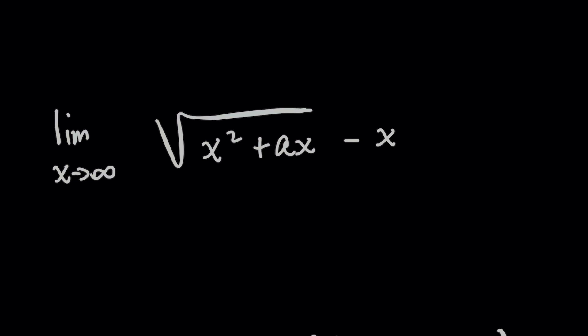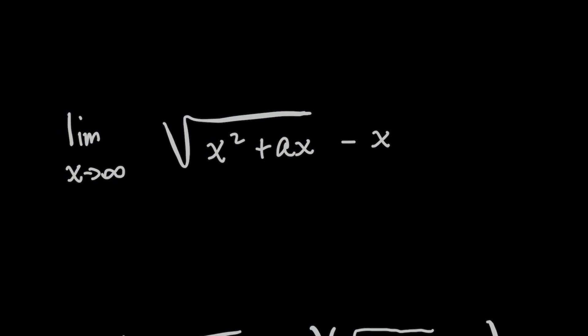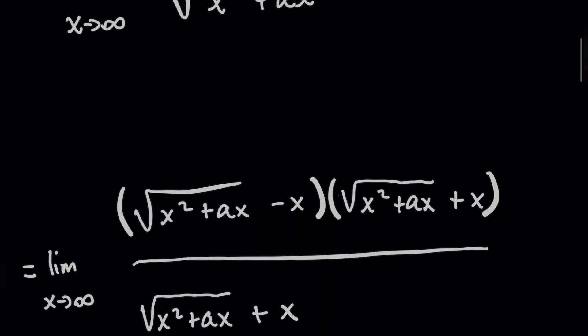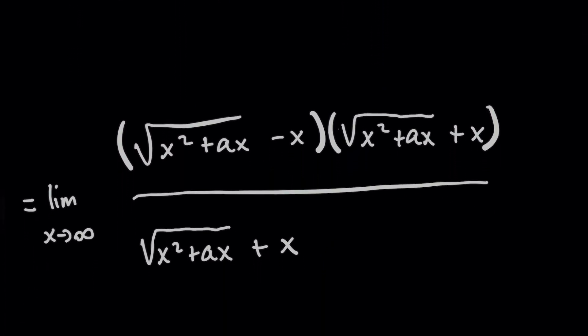What I'm going to do here is I'm going to multiply this by what's known as the conjugate. And let me explain what I'm doing here. We have something minus something here, right on the left, we're going to call those a and b. So if you have something like a minus b, multiplying that by its conjugate would be multiplying it by a plus b all divided by a plus b.